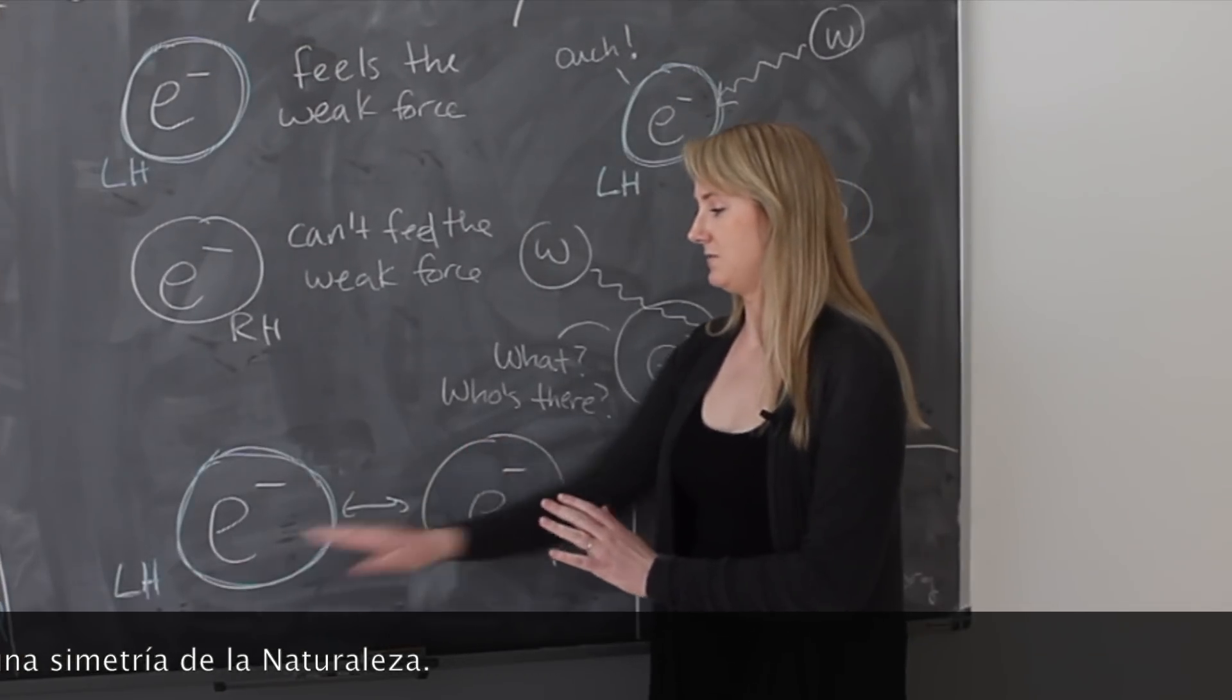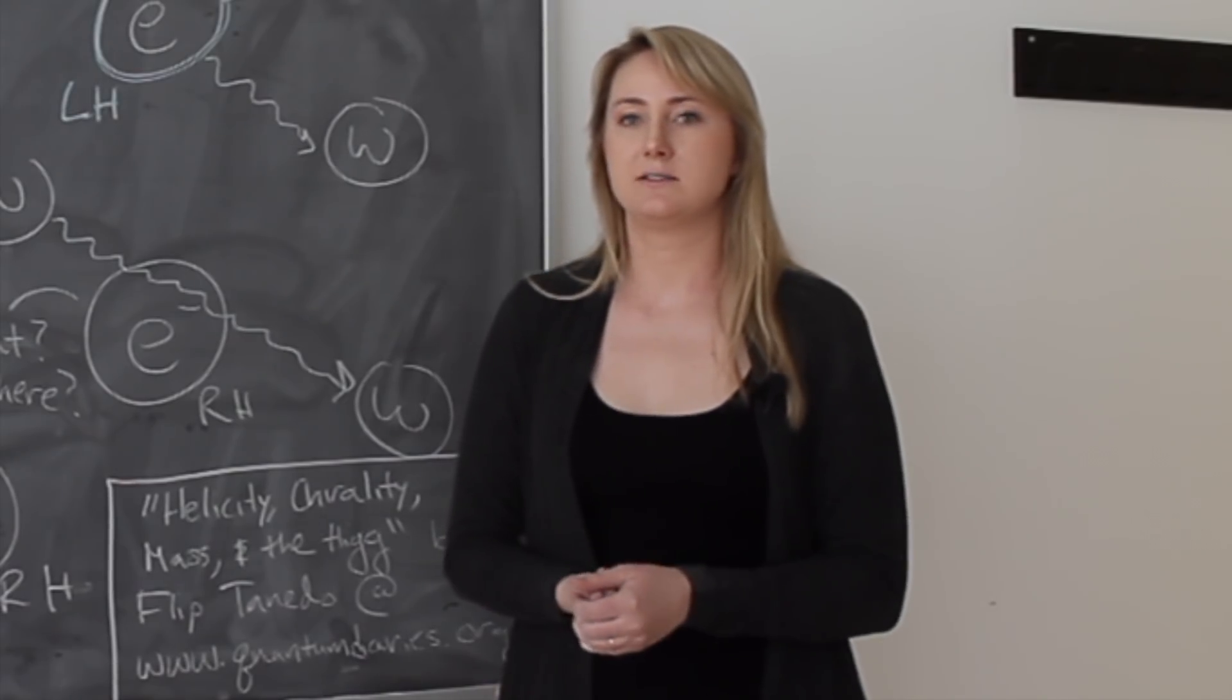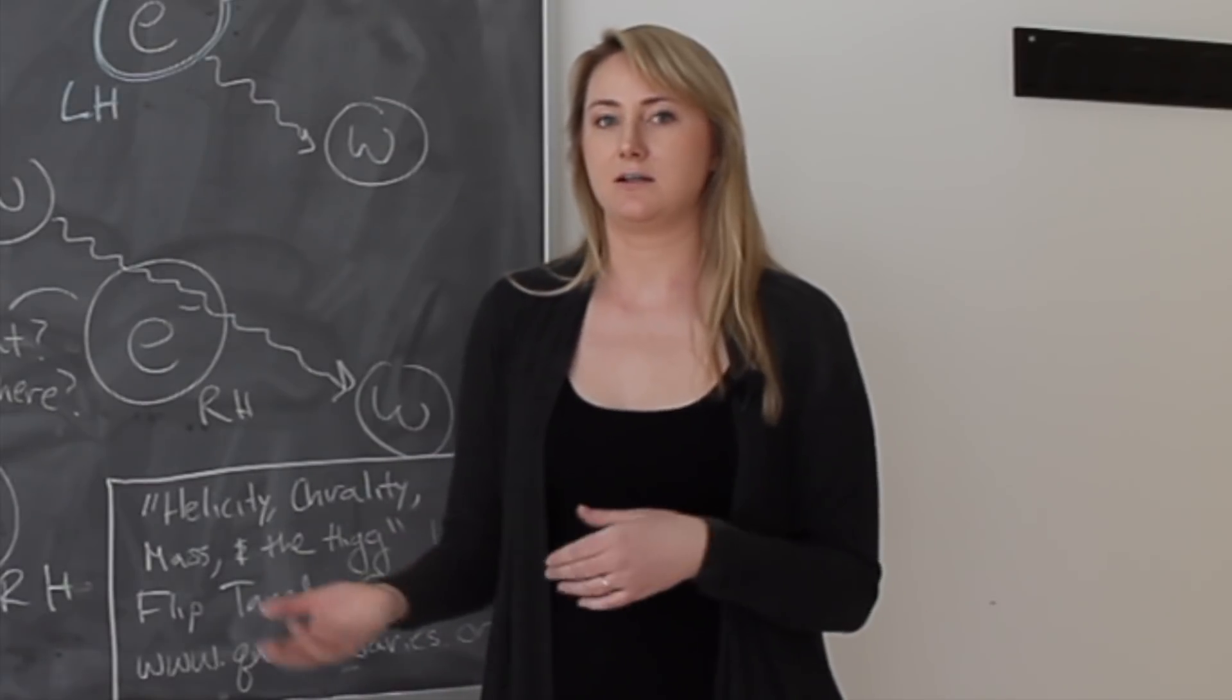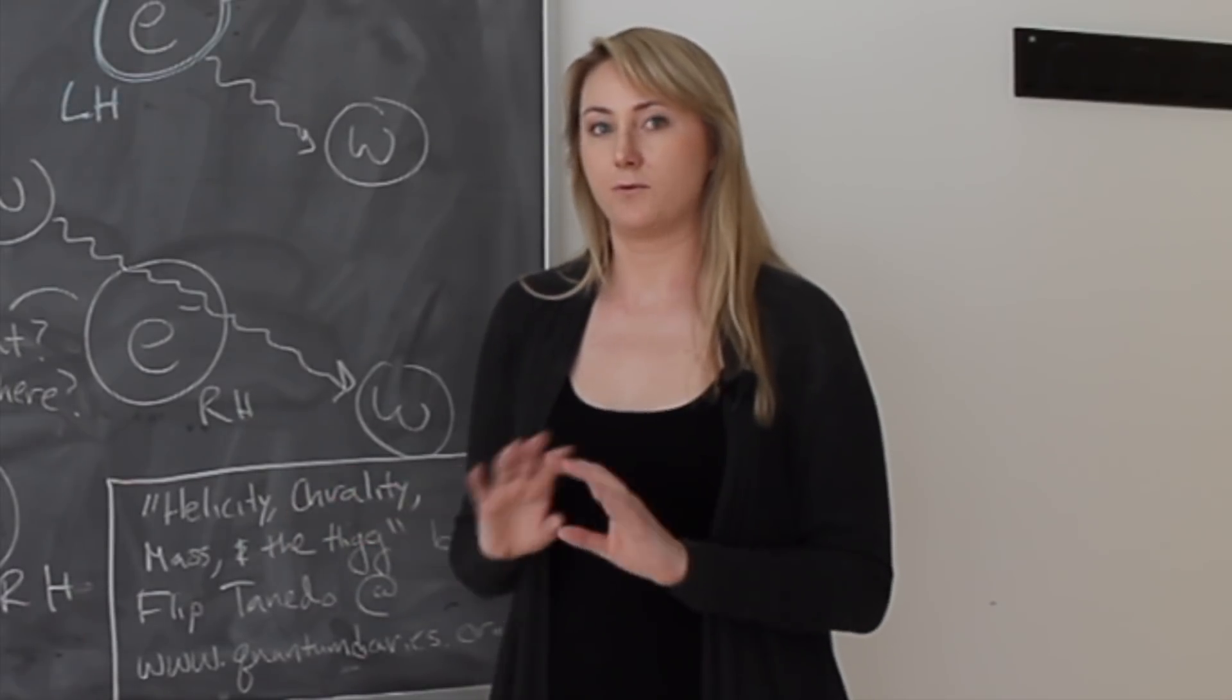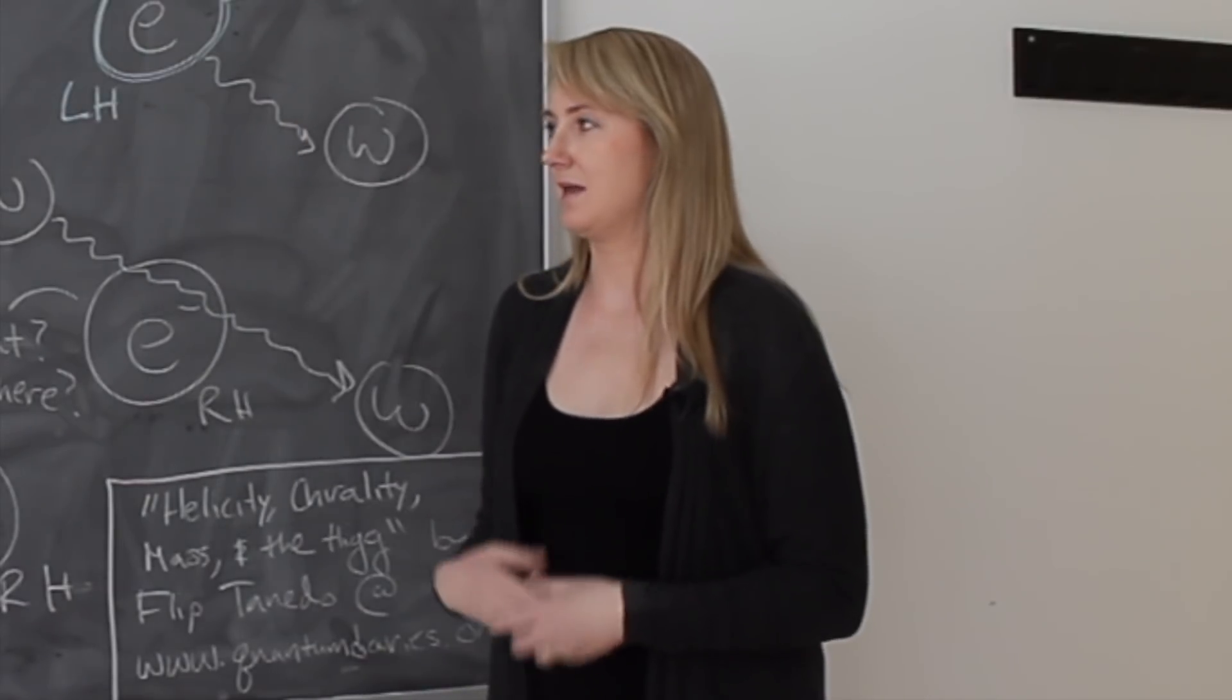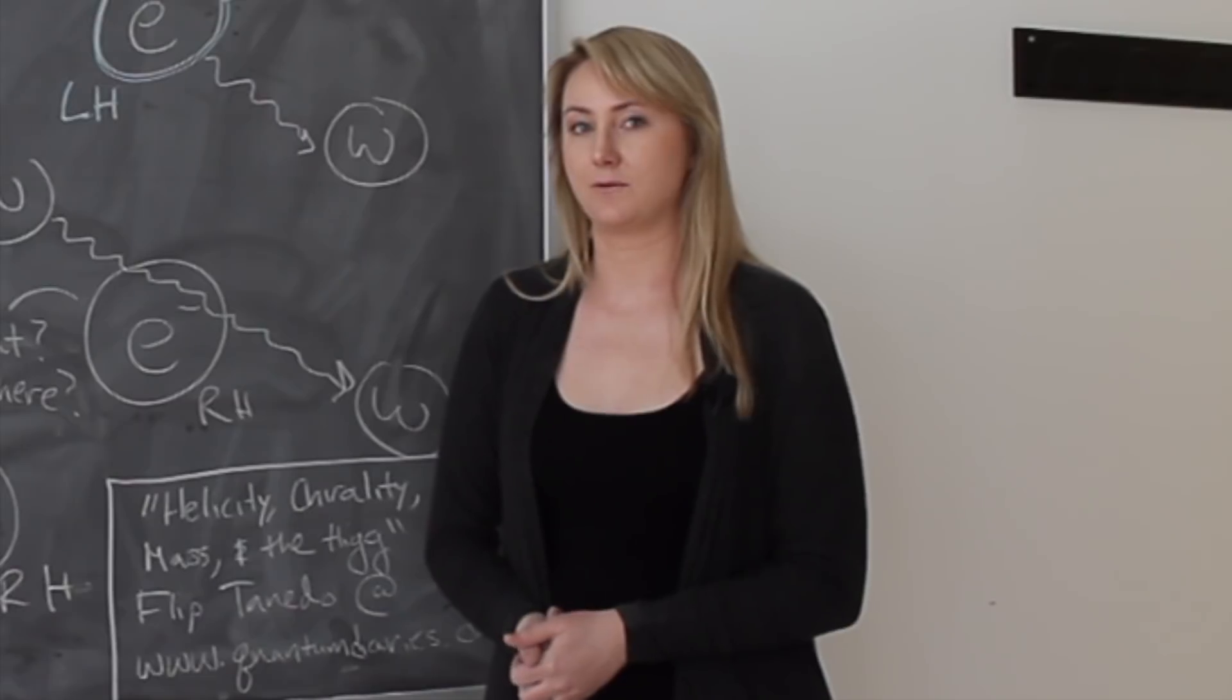The W can interact with this one, and the W can't interact with this one. So your question was, why do the electroweak interactions treat left-handed and right-handed particles differently? And the answer is that from the electroweak force's point of view, these are different particles. And this is just a fact that we've observed about the world from studying how these particles interact with each other.